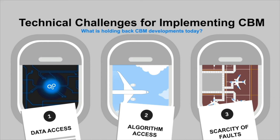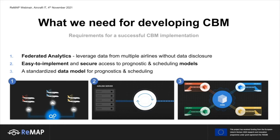What do we need? First, instead of centralizing and sharing the data, we could centralize the algorithms and have those algorithms travel from airline to airline and improve each time — this is called federated learning or federated analytics. The second need is an easy-to-implement and secure way to quickly try prognostic and scheduling models, much like the app store on your cell phone: download the model, try it out, keep it if you like it, remove it if you don't.